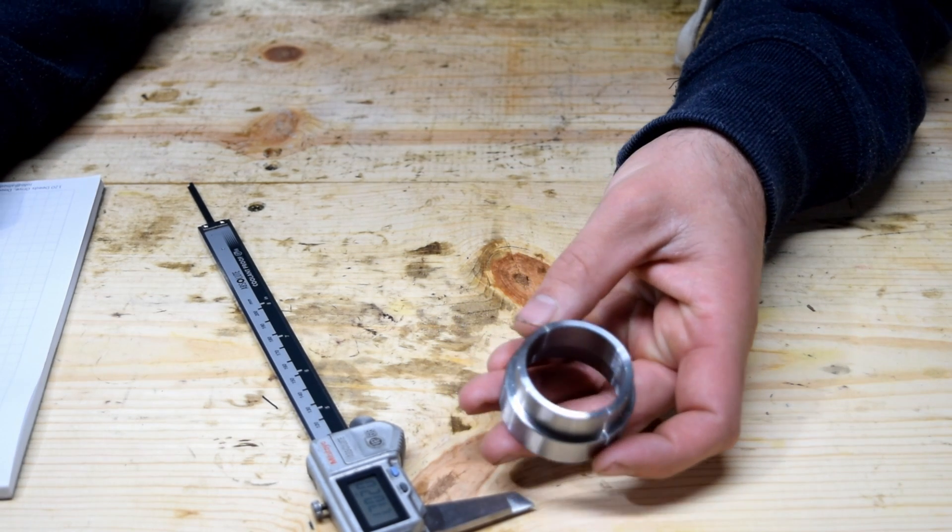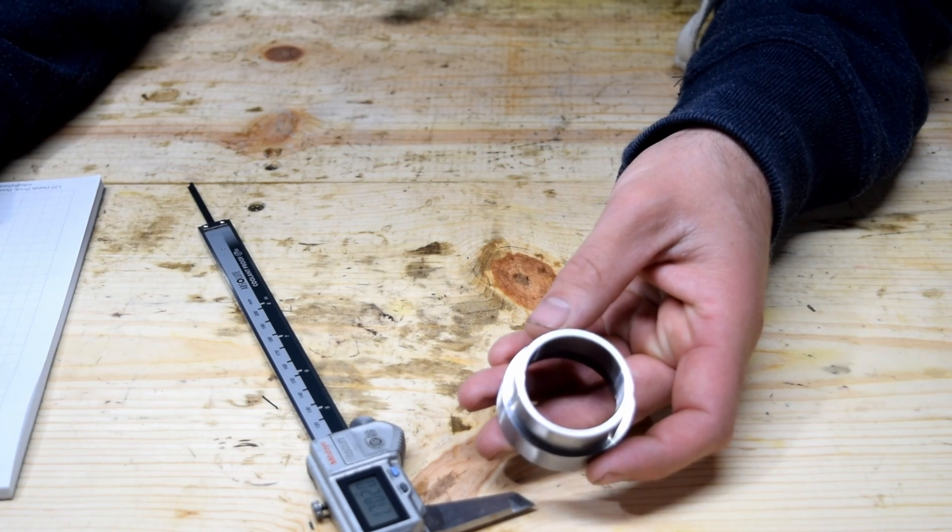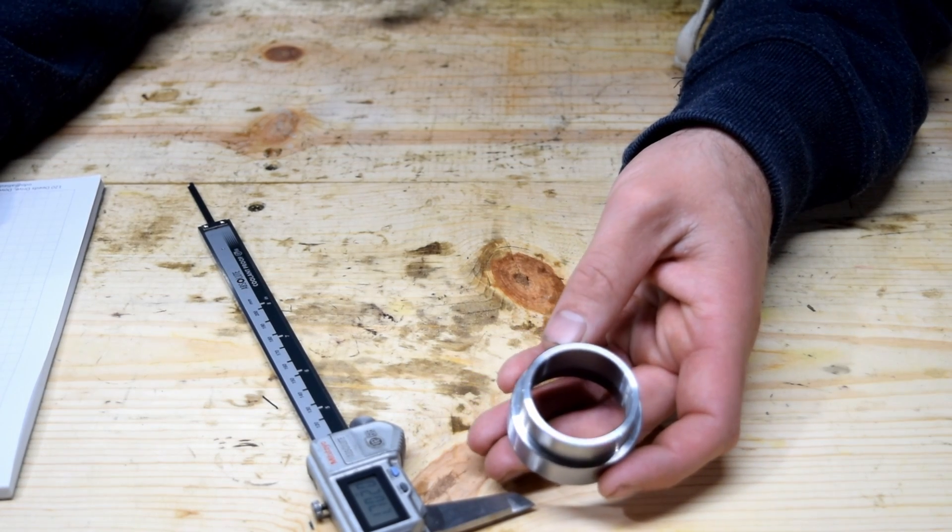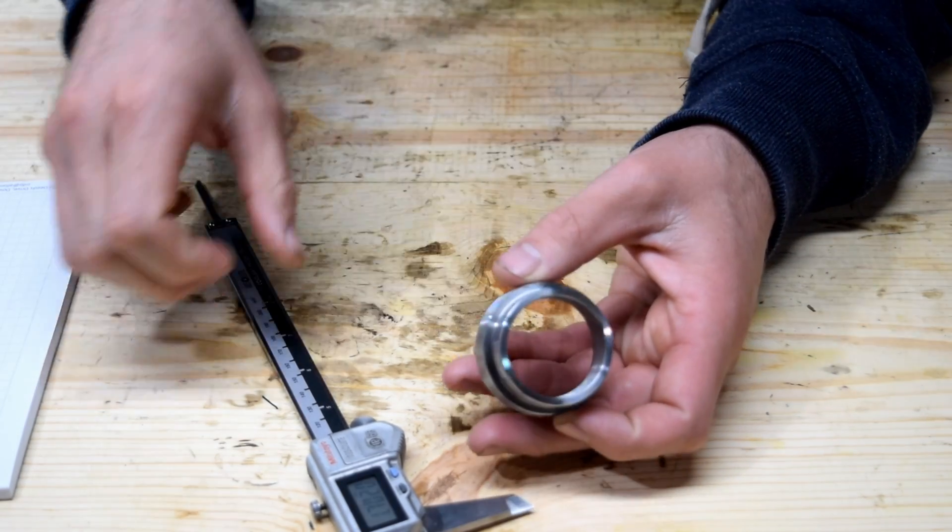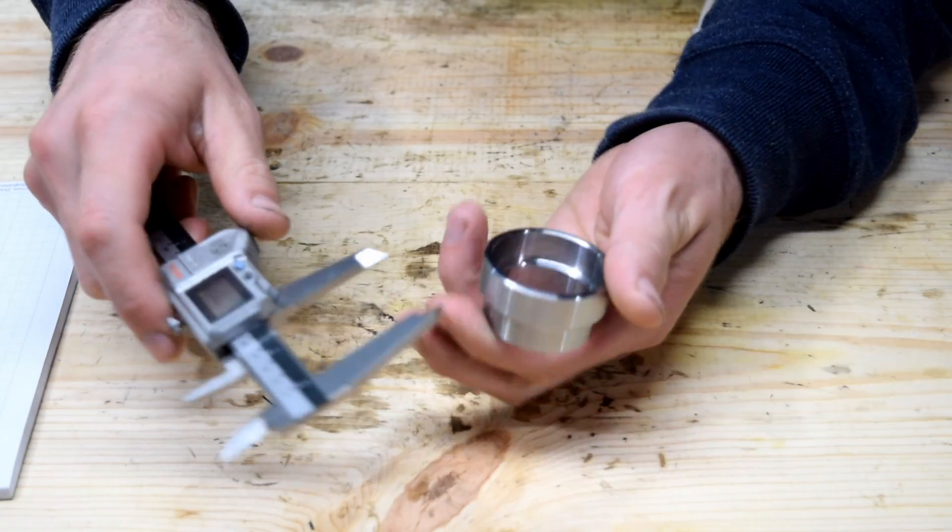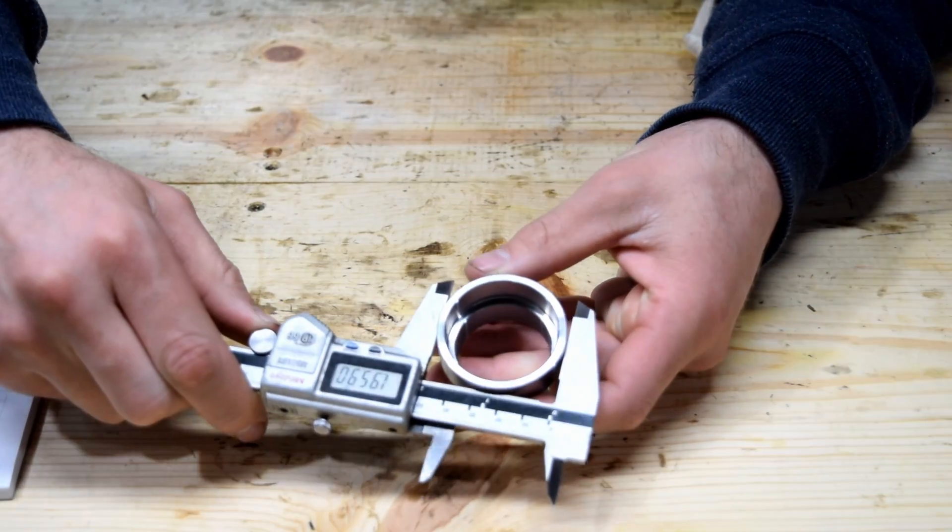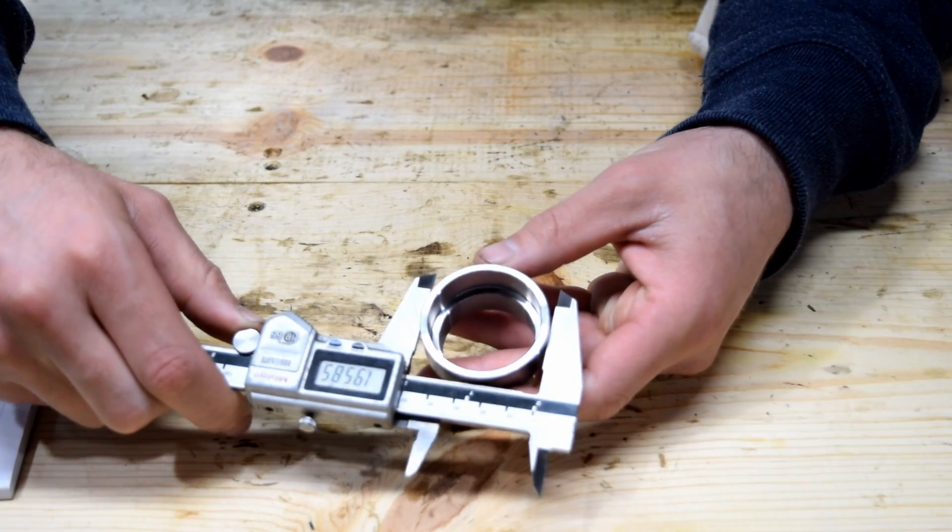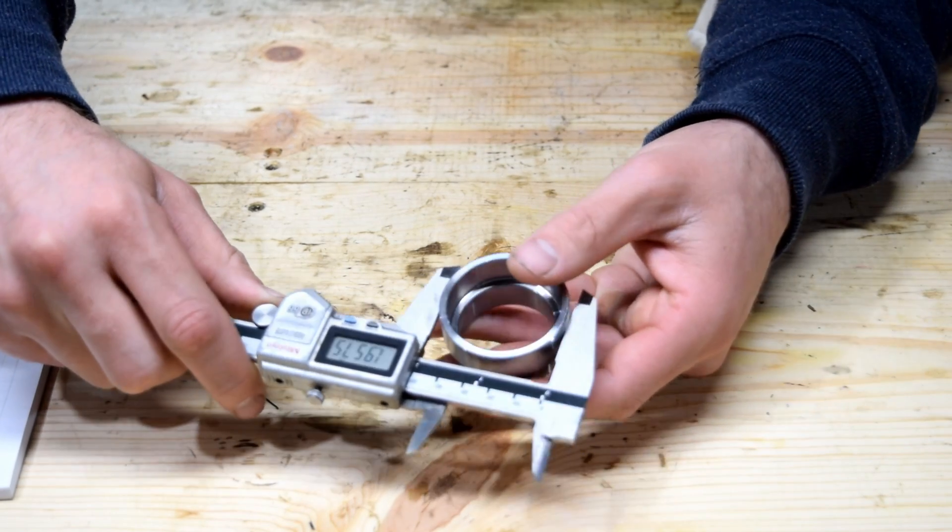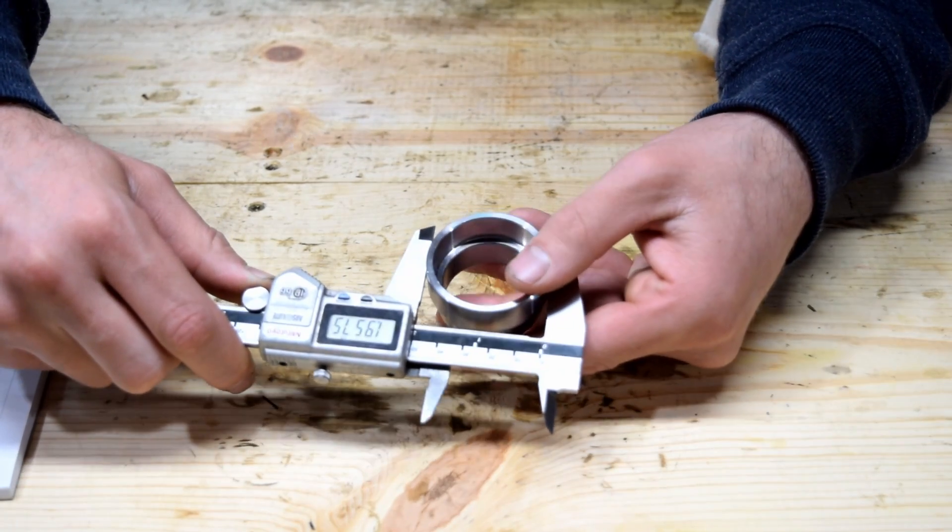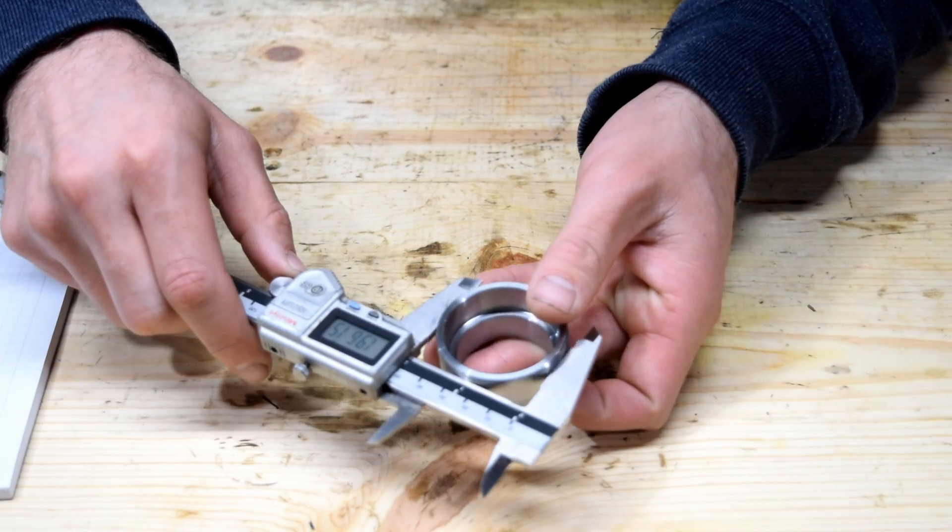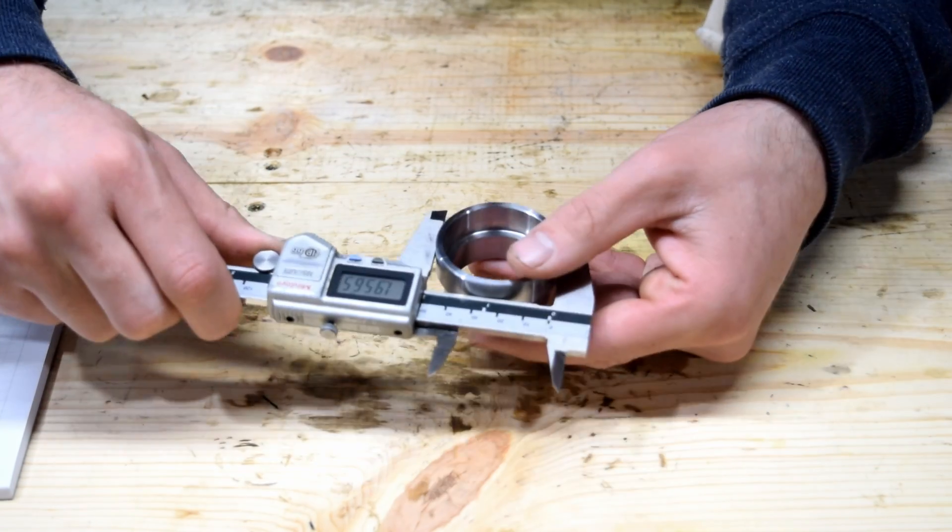So the diameter is 1 inch 700. This one's a little bit off. 957, 956.